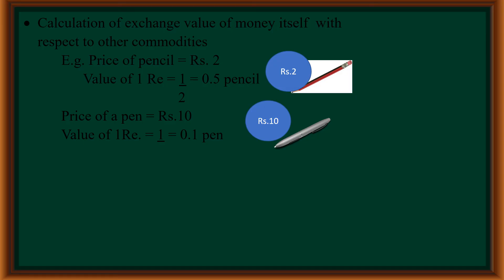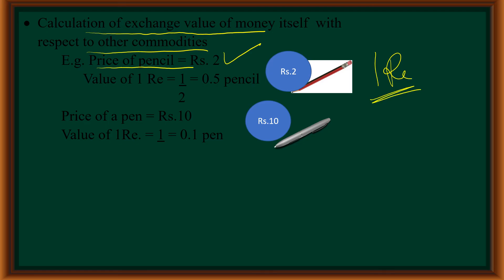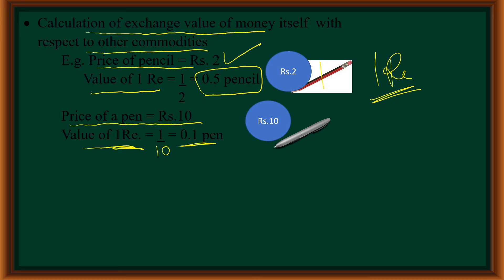As the value of goods and services is expressed in terms of money, we can also calculate the exchange value of money itself with respect to other commodities. Take the example of the price of a pencil. If the price of a pencil is 2 rupees, then for 1 rupee, you get half a pencil — that is 0.5 pencil. Similarly, if the price of a pen is 10 rupees, then the value of 1 rupee in terms of pen is 1 divided by 10, which equals 0.1 pen.